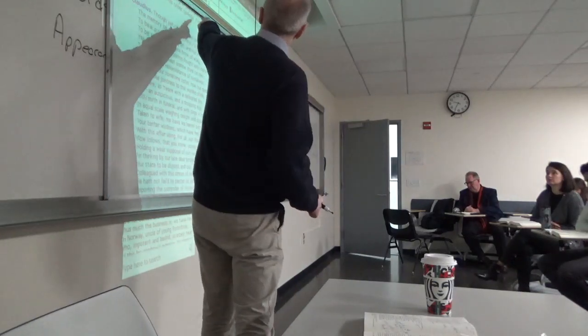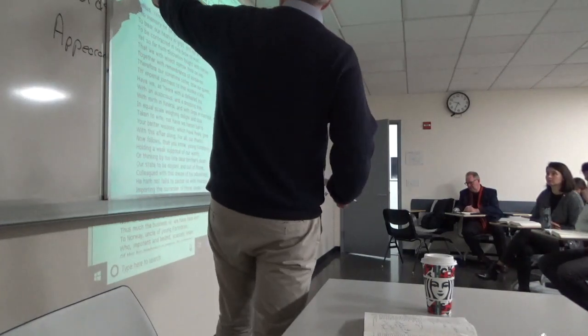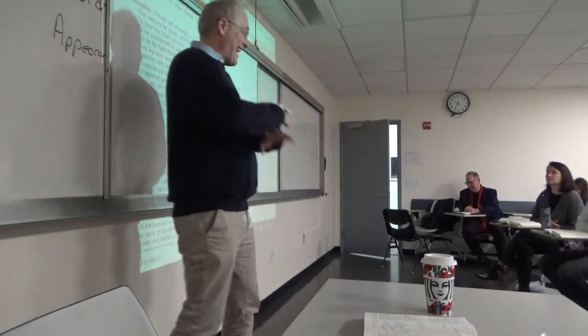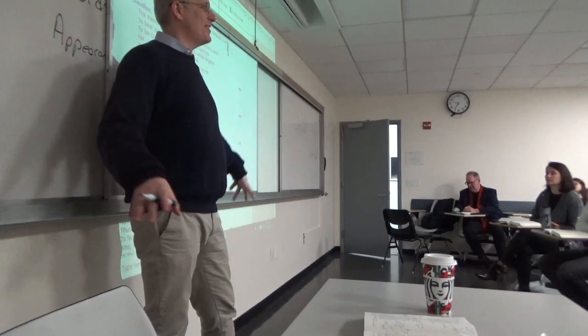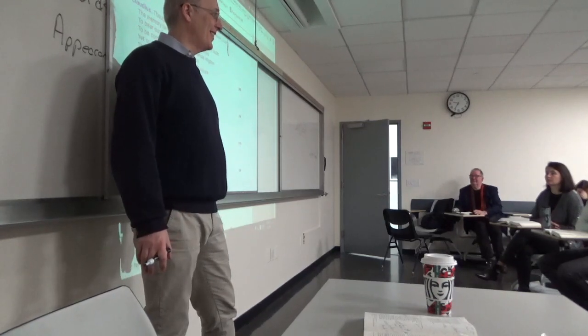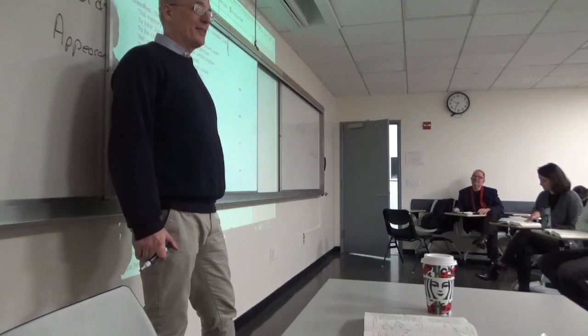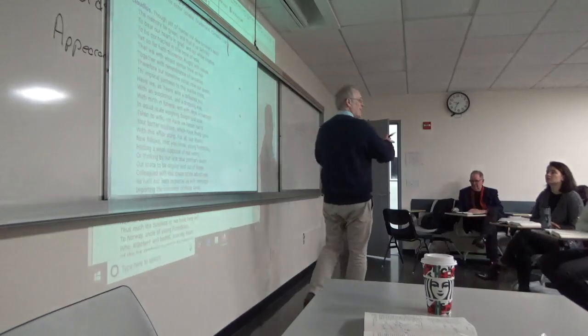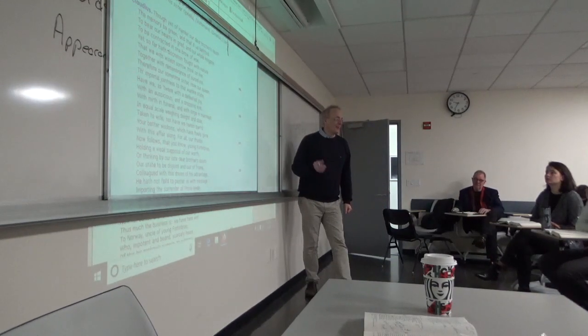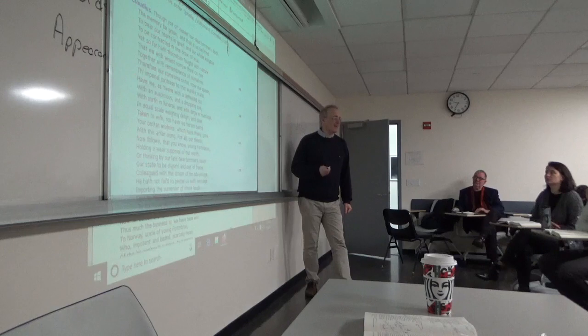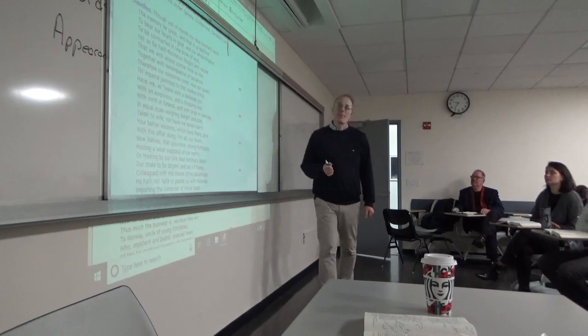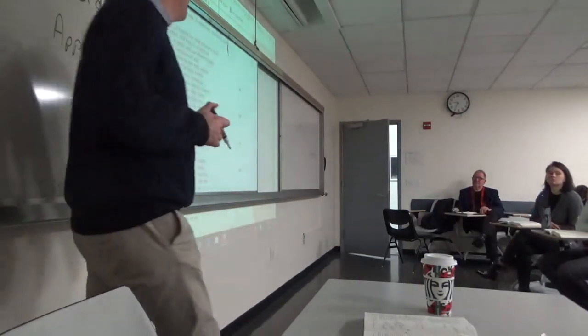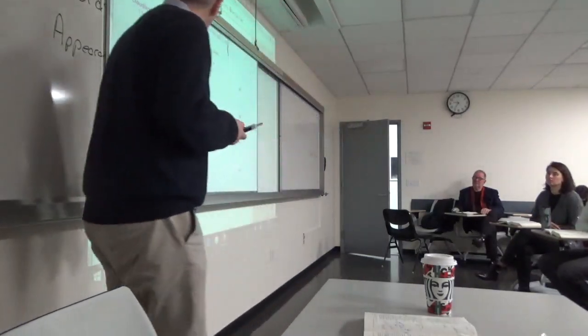Globe theater, bare stage, broad daylight, nothing there. Everything needs to be done through the words. Flourish, enter Claudius King of Denmark, Gertrude the Queen, Hamlet, Polonius, Laertes, Ophelia, Voltemand, Cornelius, Lords Attendant. That is the stage direction. Everything else has to happen through the language. Shakespeare is primarily an artist of language.